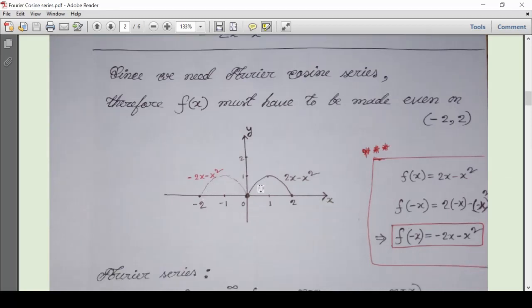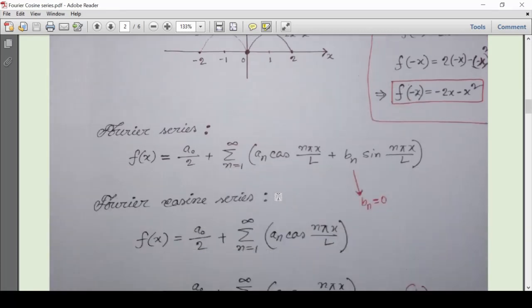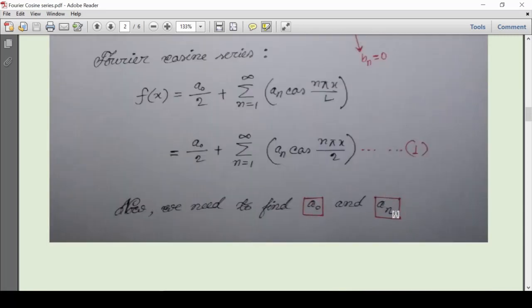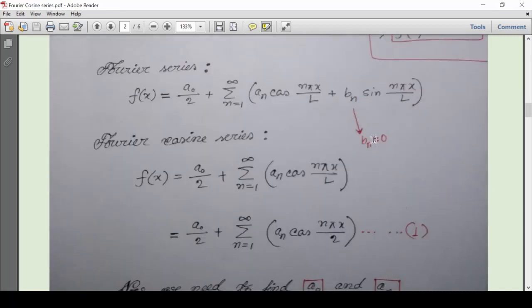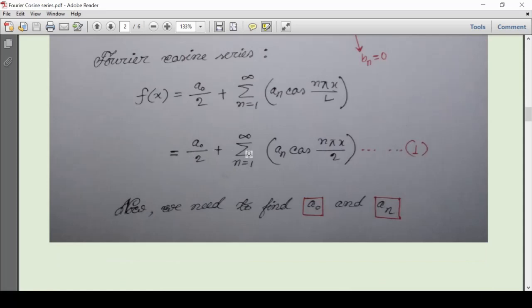By doing this, this function will become an even function, and you know that for an even function we just need to find the coefficients a_0 and a_n. b_n will always be 0 this time. This is the Fourier cosine series, and this series will be completed if we find a_0 and a_n.